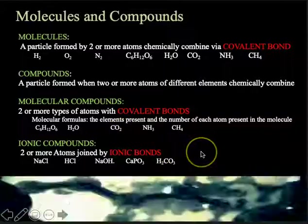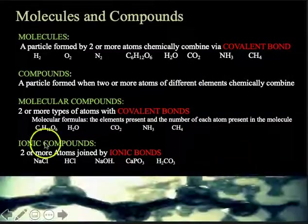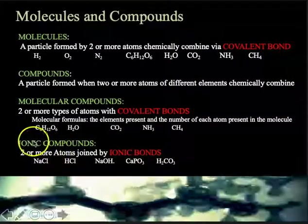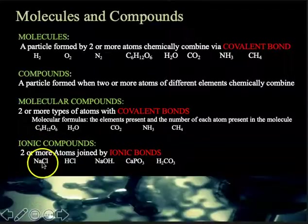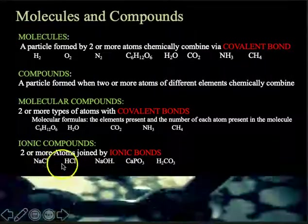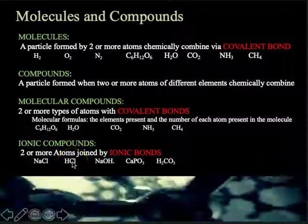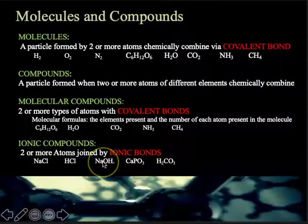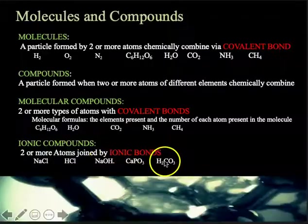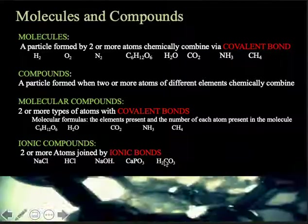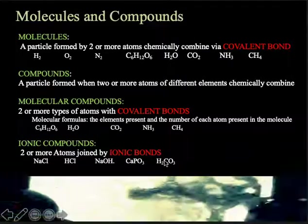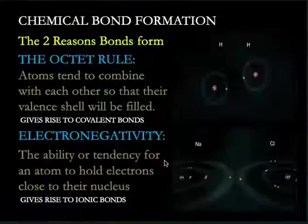And these are contrasted with ionic compounds. So, ionic compounds are compounds that are made up of two more atoms that are joined by ionic bonds, and these are classically things like salts, like NaCl, acids like hydrochloric acid or sodium hydroxide or base, calcium phosphate. And we'll learn all about those in a very superficial manner, briefly.